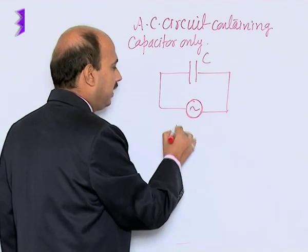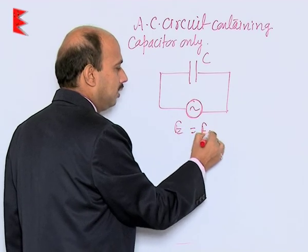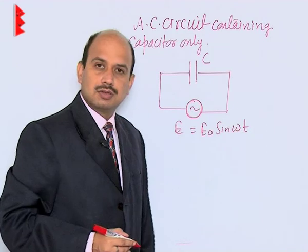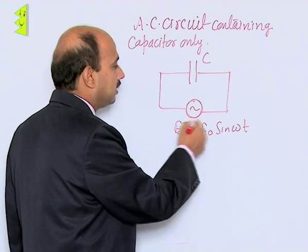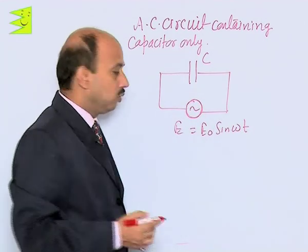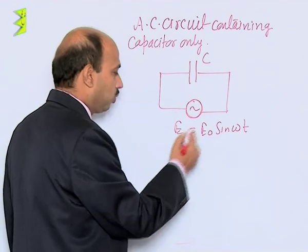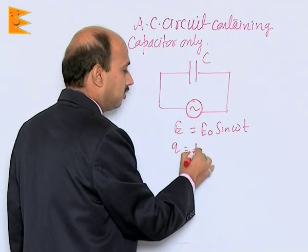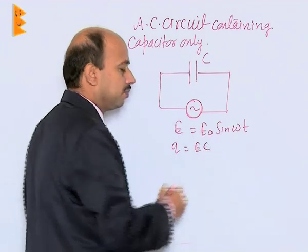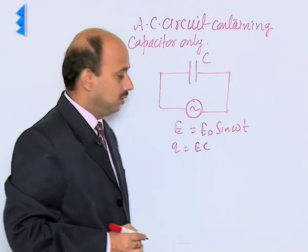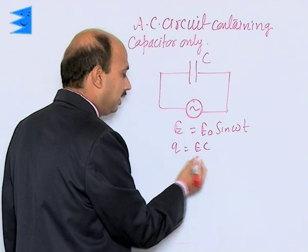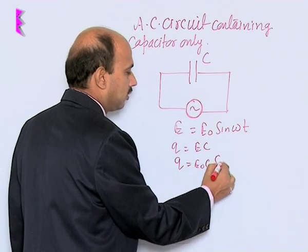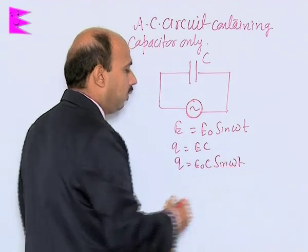Suppose the EMF applied is E = E₀ sin(ωt), that is the EMF at any instant. When charging takes place, the charge stored at any instant is Q = E × C, where C is the capacitance. So Q = E₀C sin(ωt). This is the charge at any moment.